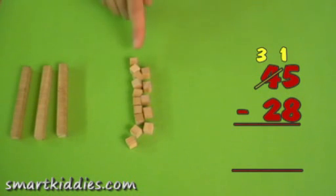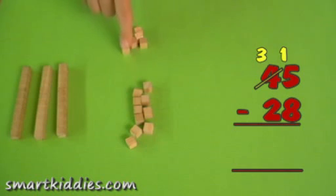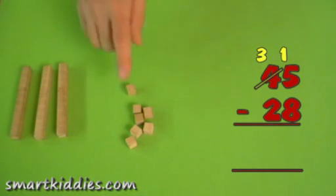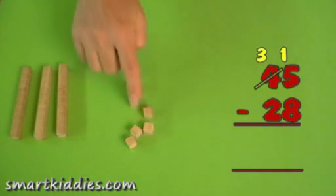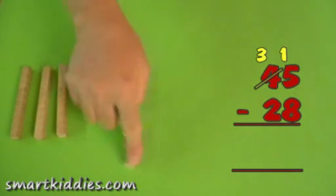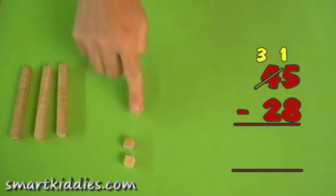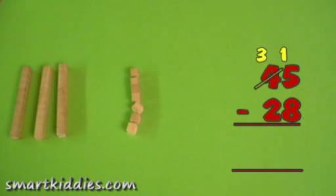Let's take 8 away. 1, 2, 3, 4, 5, 6, 7, 8. Now let's see how many units I have left. 1, 2, 3, 4, 5, 6, 7.